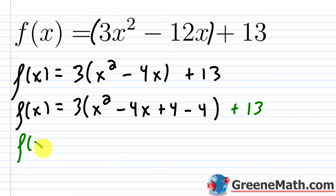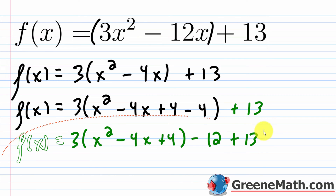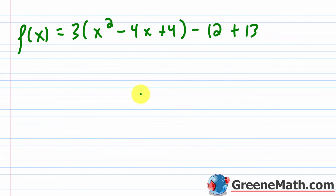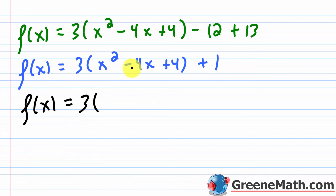So f of x equals 3 times the quantity x squared minus 4x plus 4, and then we distribute the 3 to the negative 4, giving minus 12, and then plus 13. Combining: negative 12 plus 13 is positive 1. So f of x equals 3 times the quantity x squared minus 4x plus 4, plus 1. Factoring the perfect square trinomial gives f of x equals 3 times the quantity x minus 2 squared, plus 1.